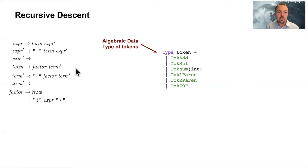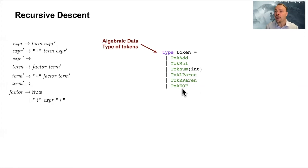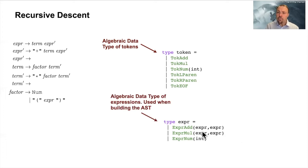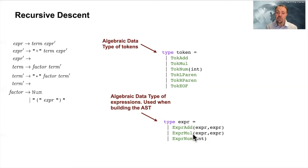We have an add token corresponding to the add terminal symbol, mul corresponding to the multiplication symbol, and NumInt corresponding to a number — which actually carries the actual integer value. Then we have a left parenthesis, a right parenthesis, and a token for end of file or end of stream. What we return back is an abstract data type with elements: ExpressionAdd, ExpressionMul, and a Number. This forms the actual AST where we discard parse tree details and return only abstract syntax.